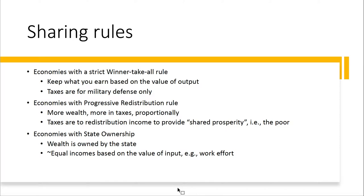Everything else we spend on that people seem to fight over — like the arts or Planned Parenthood — is really a small portion of our budget, but it gets the most fights. Economies with progressive redistribution rules have the more wealthy paying a higher percentage in taxes proportionally. This could be like Sweden, where taxes are really used to redistribute income to provide this idea of shared prosperity.